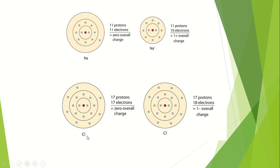Moreover, chlorine has atomic number 17, which means its configuration is 1s2, 2s2, 2p6, 3s2, 3p5. So there are seven electrons in the outermost shell of chlorine — seven electrons as well as seventeen protons. It has a very strong tendency to accept an extra electron to complete its octet. So it accepts the electron from sodium and attains the nearest noble gas configuration. The bond formed by the complete transfer of electron from sodium to chlorine is known as the ionic bond.